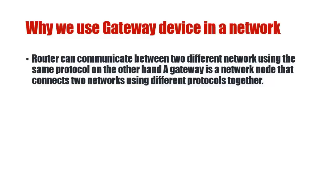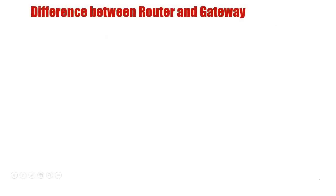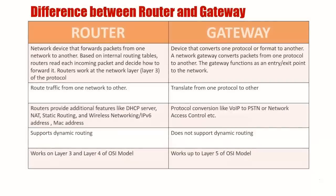On the other hand, a gateway is used to communicate between two different networks using different protocols. For this reason, a gateway is also called a protocol converter. Here are a few differences between router and gateway — you can go through this.